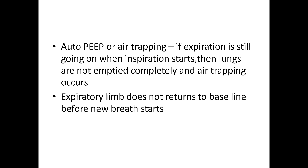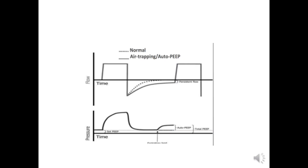Here you can see auto-PEEP depicted on a flow-time scalar. The dotted line represents the normal pattern, while the bold line depicts air trapping or auto-PEEP. In air trapping, the expiratory limb does not reach the baseline — there is a small area not returning to baseline, indicating auto-PEEP or air trapping.